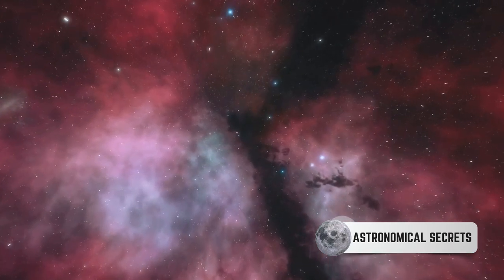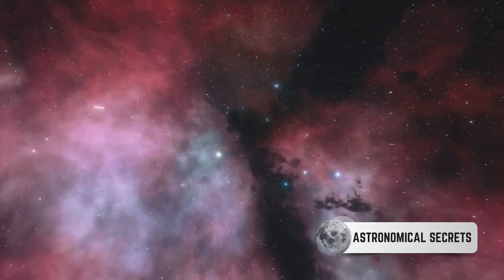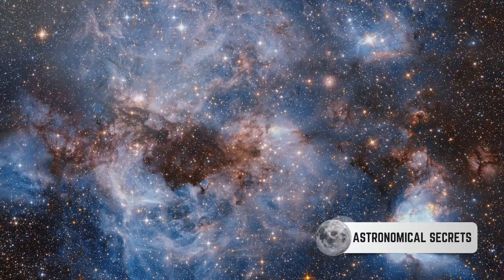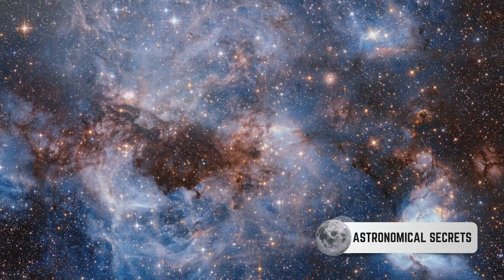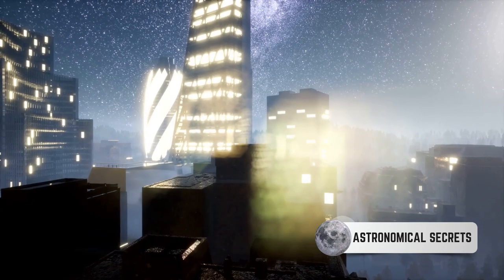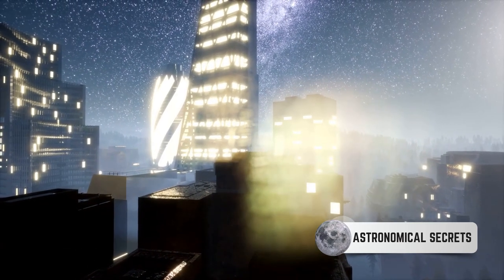These spiral arms are also home to older stars like our Sun, which is located in a smaller spur called the Orion Arm, about 26,000 light-years away from the downtown. The stars and other celestial bodies aren't randomly scattered across these structures.